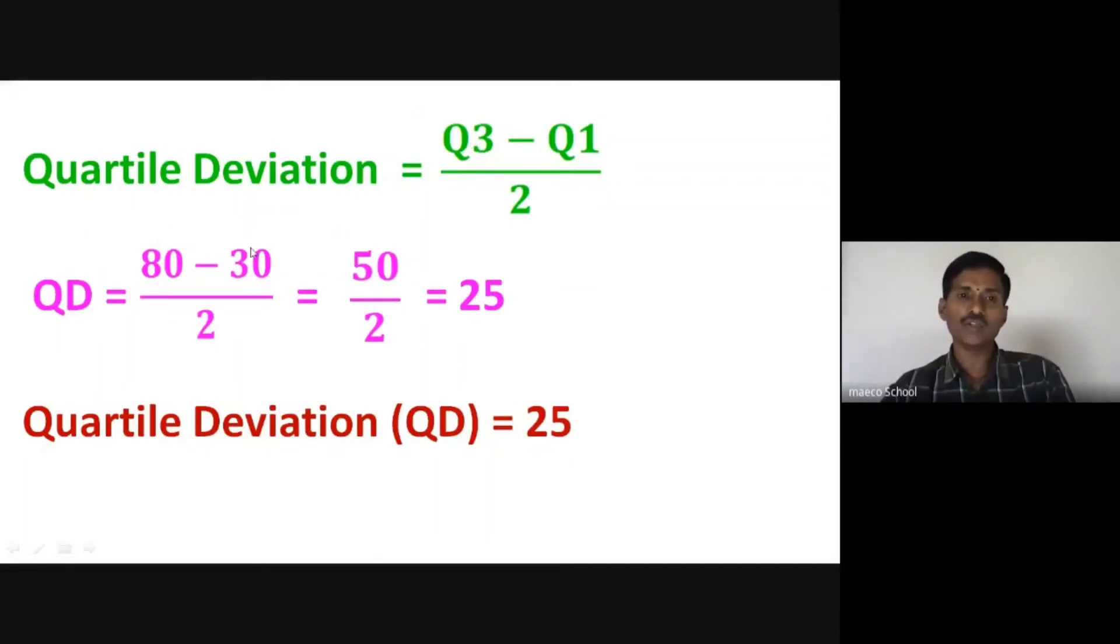Now we have Q1 and Q3. Quartile Deviation is equal to 80 minus 30 divided by 2. 80 minus 30 equals 50, so this becomes 50 by 2, which equals 25. The value of quartile deviation is 25.